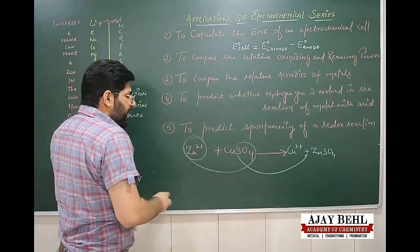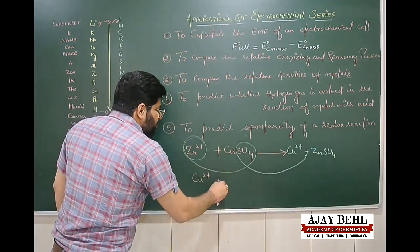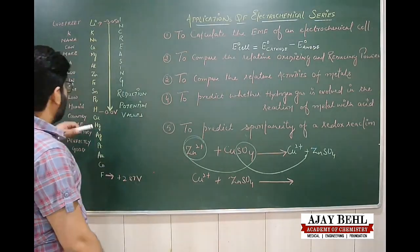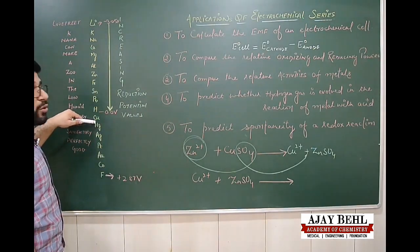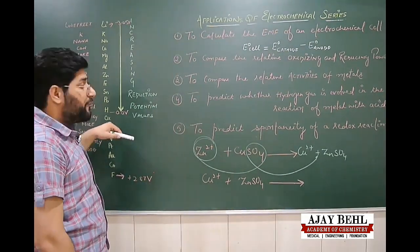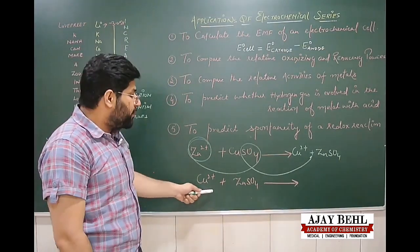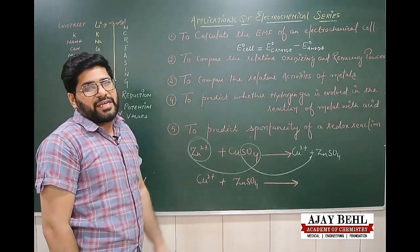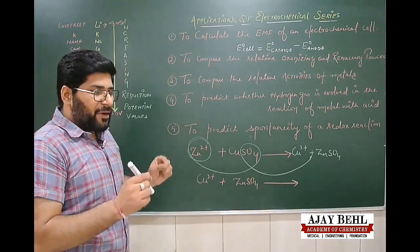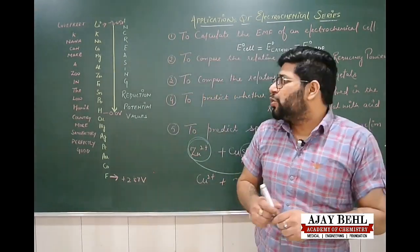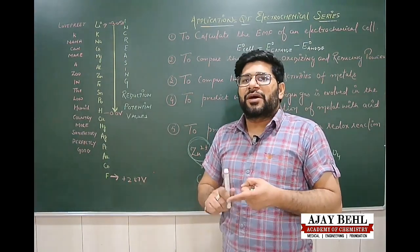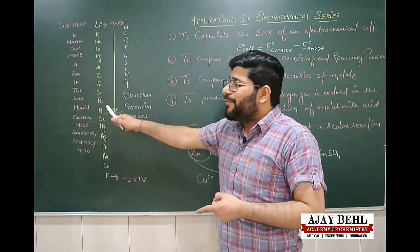However, if copper ions are reacted with zinc sulfate, no reaction will occur, because copper is below zinc in the series. Copper's oxidation potential is less than zinc's, so copper cannot displace zinc from zinc sulfate.